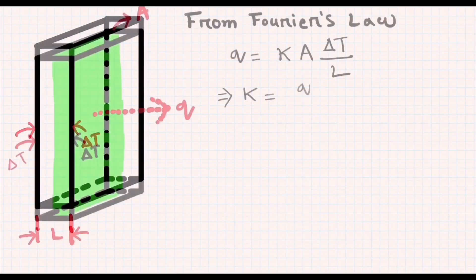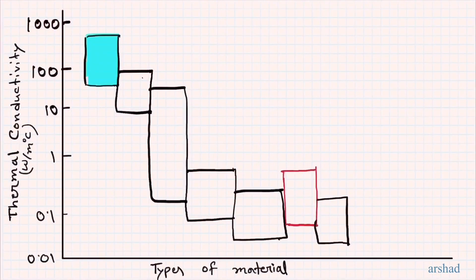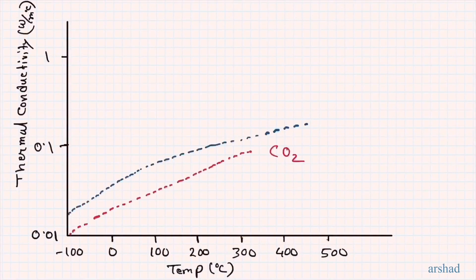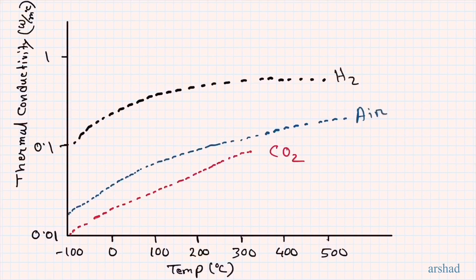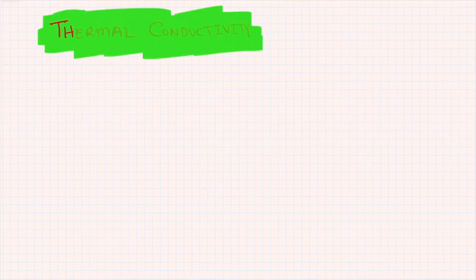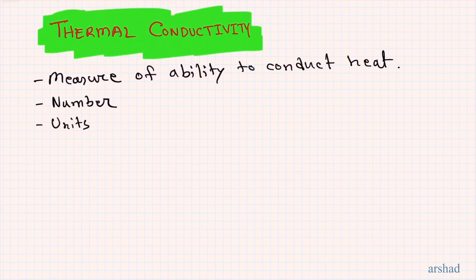In this video we are going to learn about thermal conductivity. Thermal conductivity is a parameter that tells you how much heat a material can transfer through it by means of heat conduction. It is a measure or ability of a material to conduct heat. It is a number, so it has a numerical value and it also has some units.